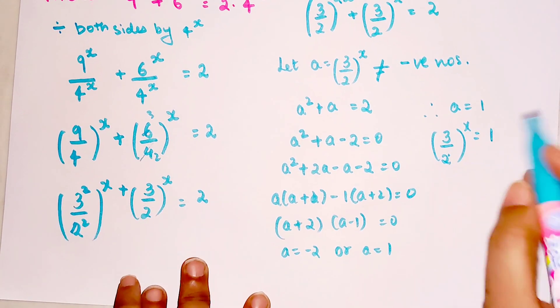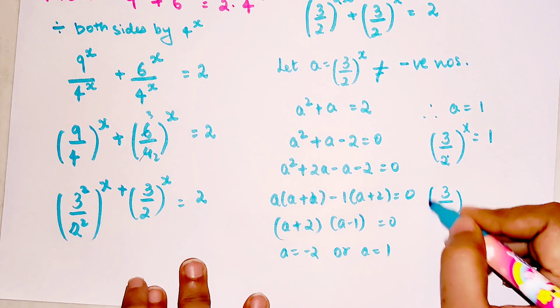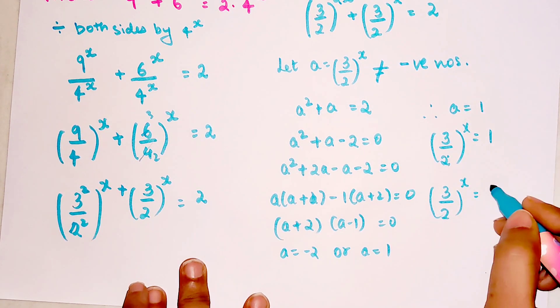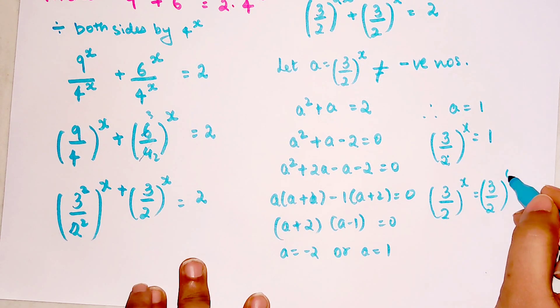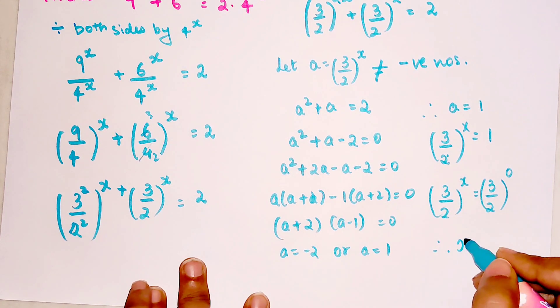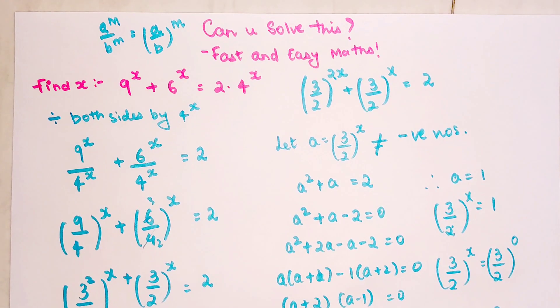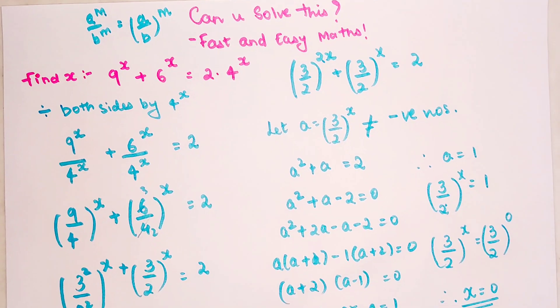Now I know that (3/2)^x can be 1 only and only if the entire power is becoming 0. Therefore I can say that the value of x = 0. So do like and subscribe to my channel for many such videos.